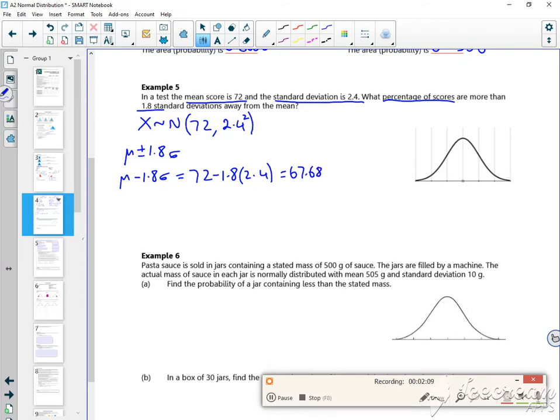You have to be careful with my writing, I'm writing quite good for this. And then mu plus 1.8 sigma is 72 plus 1.8 lots of 2.4, which is 76.32.